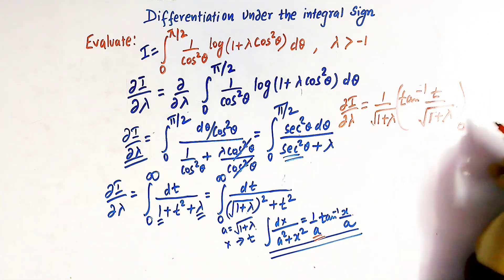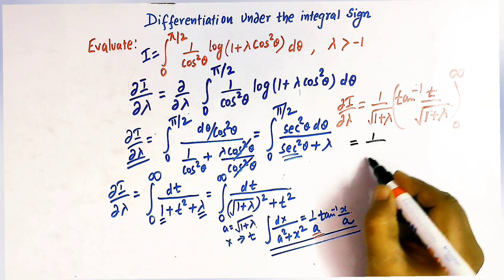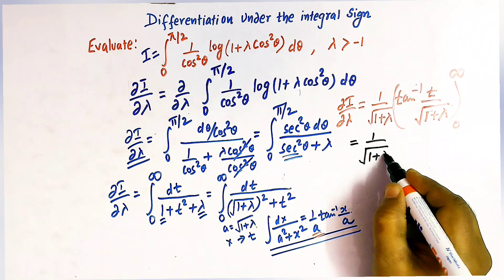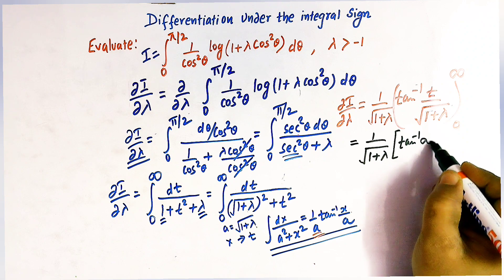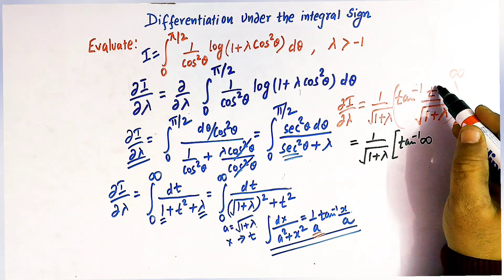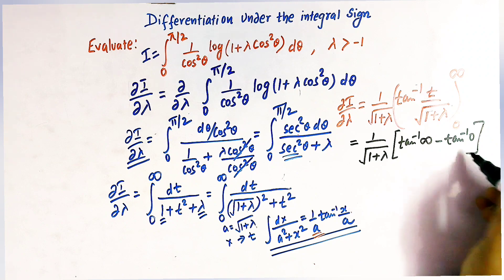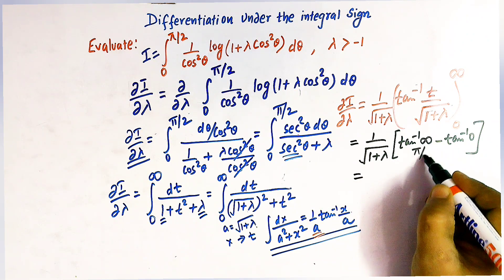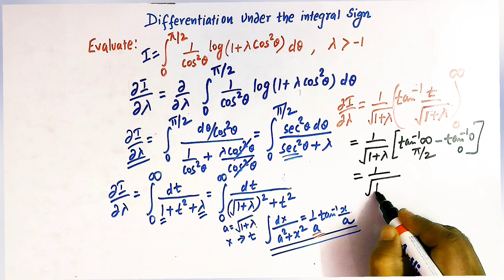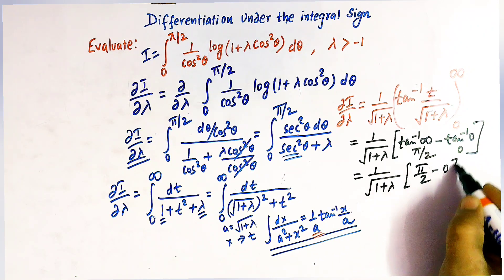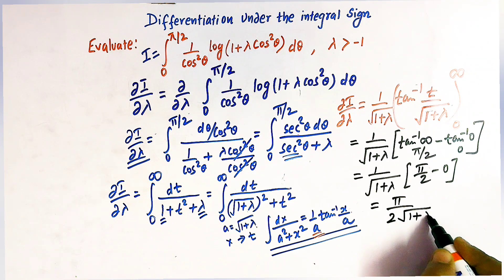Substituting the limits: as t → ∞, tan⁻¹(∞) = π/2, and at t = 0, tan⁻¹(0) = 0. So ∂i/∂λ = (1/√(1+λ))·(π/2 − 0) = π/(2√(1+λ)).